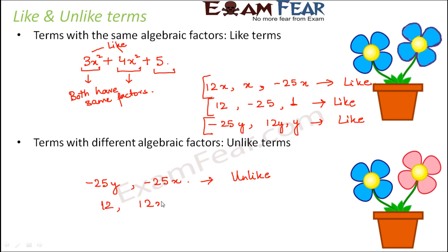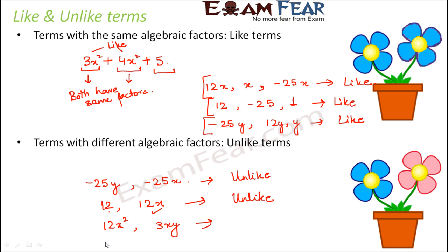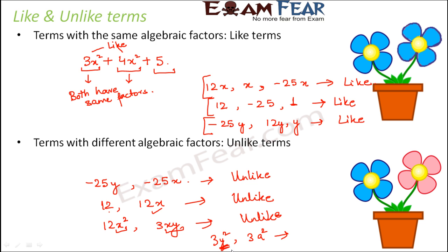Similarly, if you compare 12 and 12x, these are unlike terms because the algebraic factor for 12x is x, while 12 has no algebraic factor. If you compare 12x squared and 3xy, they are unlike terms because the algebraic part of 12x squared is x squared, while for 3xy it is xy. Similarly, 3y squared and 3a squared are unlike terms because one has y squared and the other has a squared. By comparing algebraic factors this way, we can decide whether a pair of terms are like or unlike.